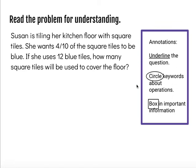So I'm going to use my annotations to help me think and read this carefully. I'm going to underline the question, how many square tiles will be used to cover the floor? I'm going to circle key words that tell me if I might add, subtract, multiply, or divide, or what my solution should be, what kind of solution I should have. In this case I'm circling the word of, meaning that I will probably have to multiply at some point.